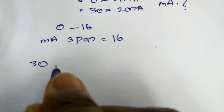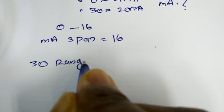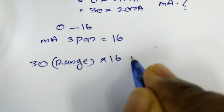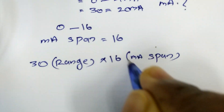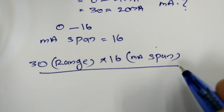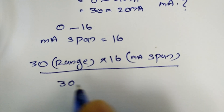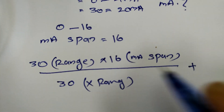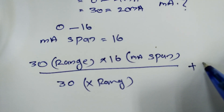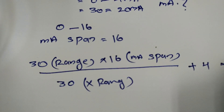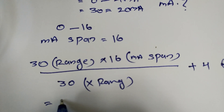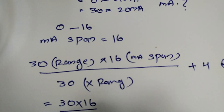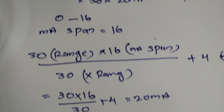For a range of 30, we add 4 mA. The equation is: 30 multiplied by 16, divided by 30, plus 4. This is equal to 20 mA. That is our equation.